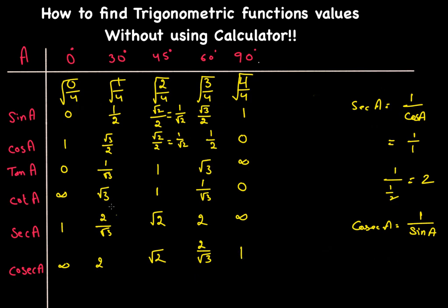You've now found all the values of the six trigonometric functions for 0°, 30°, 45°, 60°, and 90° without using any calculator. If you ever forget your calculator before a test or exam, you can make this table yourself.